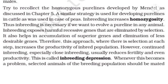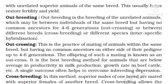Inbreeding increases homozygosity. Thus, inbreeding is necessary if we want to evolve a pure line in any animal. Inbreeding exposes harmful recessive genes that are eliminated by selection. It also helps in accumulation of superior genes and elimination of less desirable genes. Therefore, this approach, where there is selection at each step, increases the productivity of the inbred population. However, continued inbreeding, especially close inbreeding, usually reduces fertility and even productivity. This is called inbreeding depression. Whenever this becomes a problem, selected animals of the breeding population should be mated with unrelated superior animals of the same breed to restore fertility and yield.